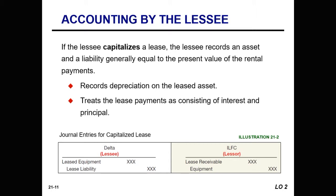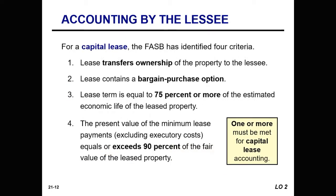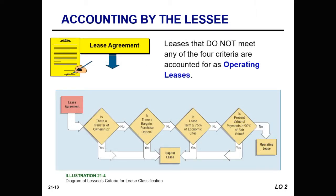If the lessee capitalizes a lease, the lessee records an asset and a liability generally equal to the present value of the rental payments. They'll record depreciation on the lease asset and treat the lease payments as consisting of interest and principal. One or more of these four criteria must be met in order for capital lease accounting, where we recognize the asset and a liability on our books.